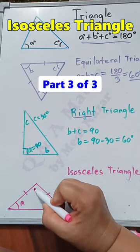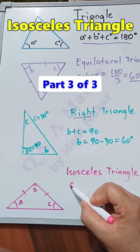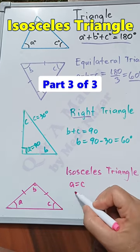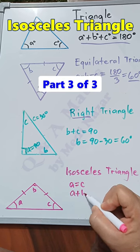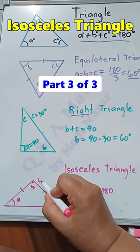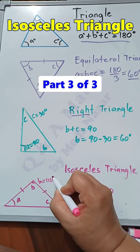Let's say this is A, this is B, and this is C. A is equal to C. The sum of the internal angles or interior angles is A plus B plus C equals 180 degrees. Let's say B is equal to 110 degrees.